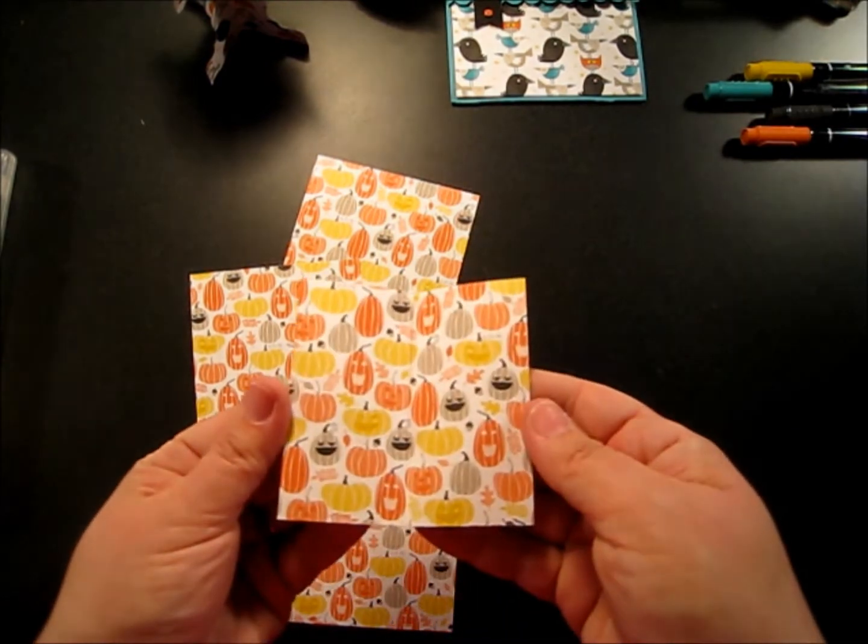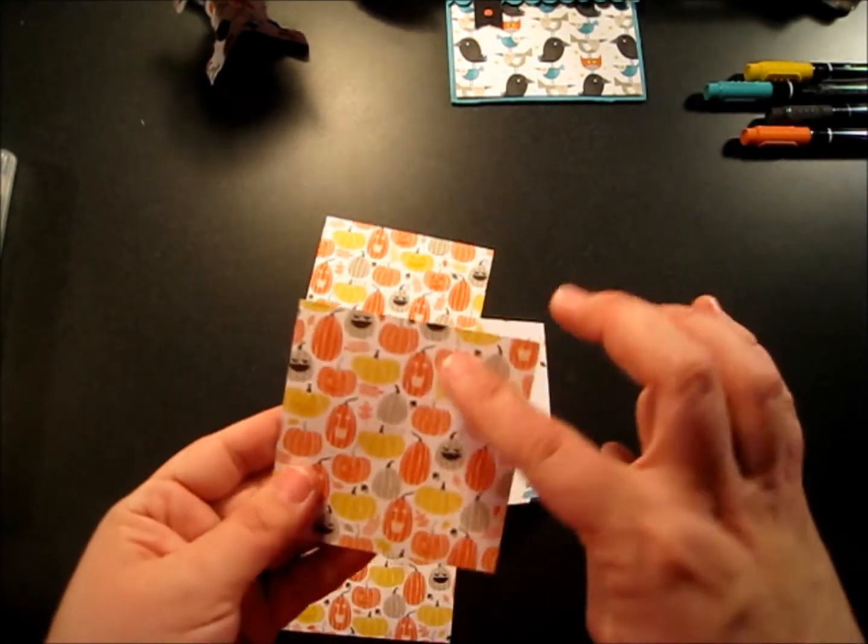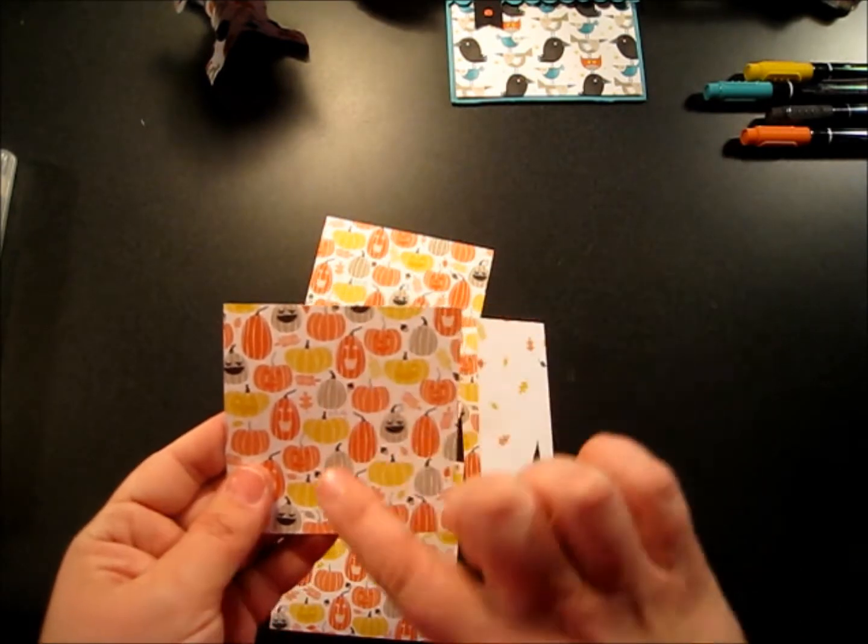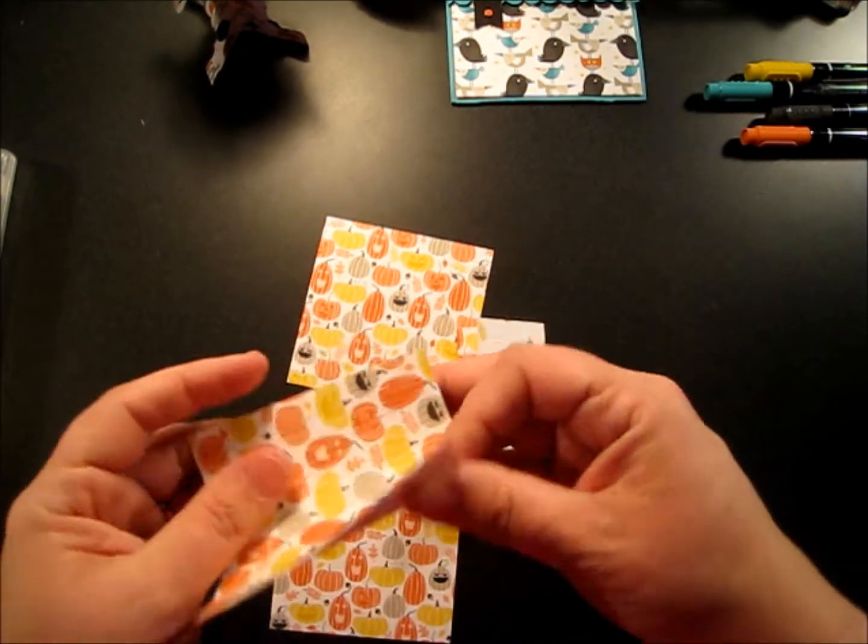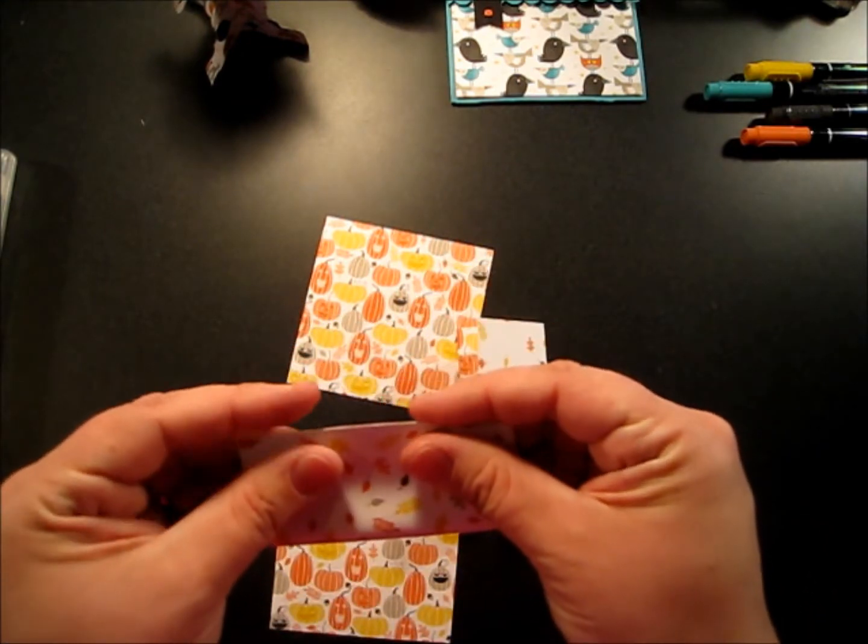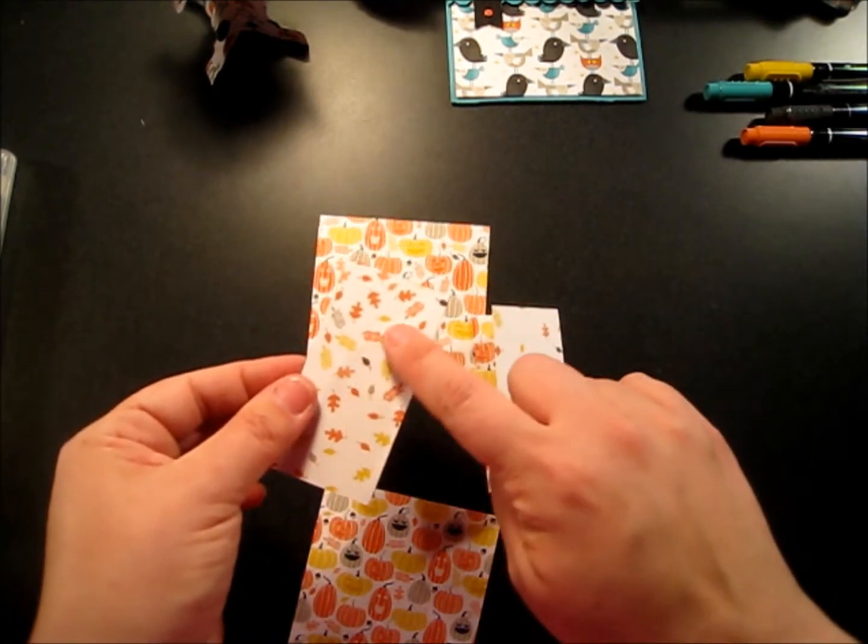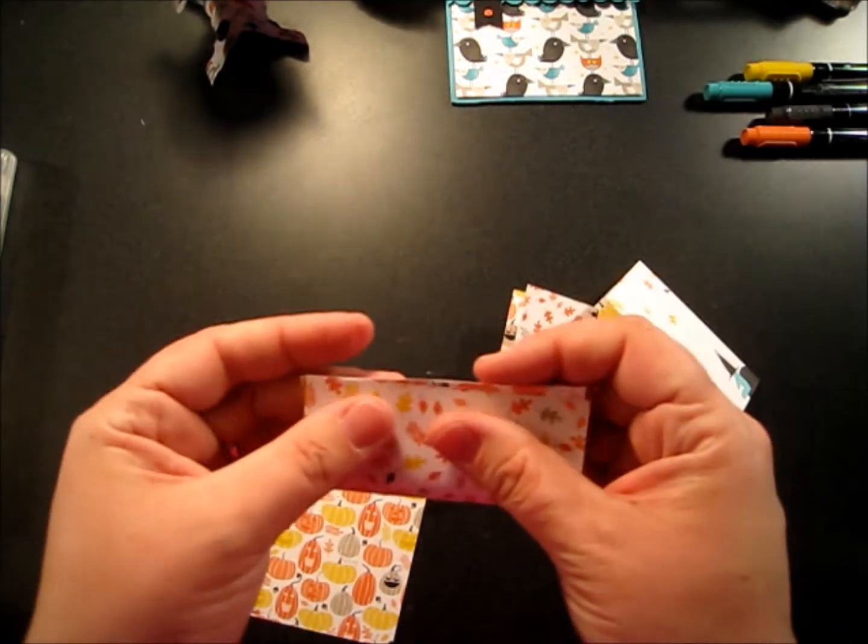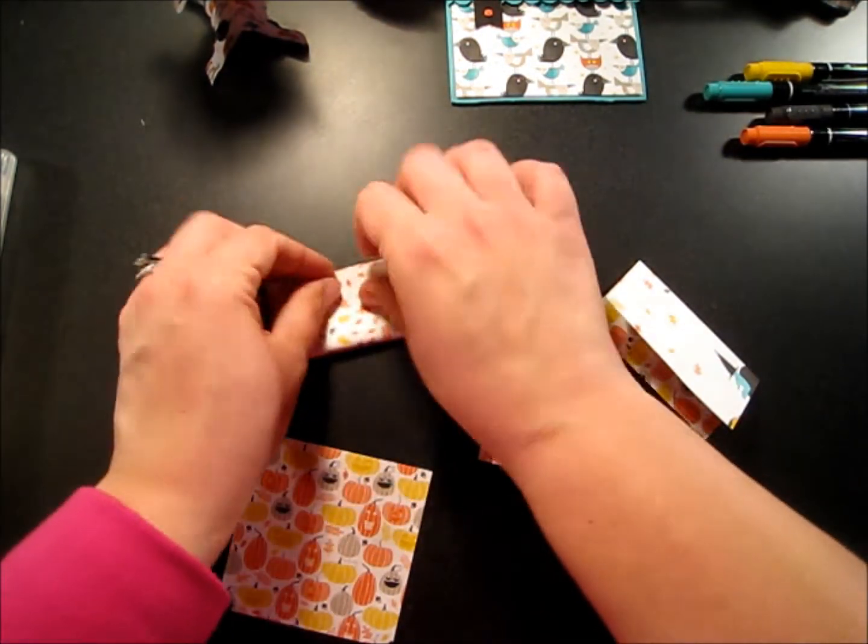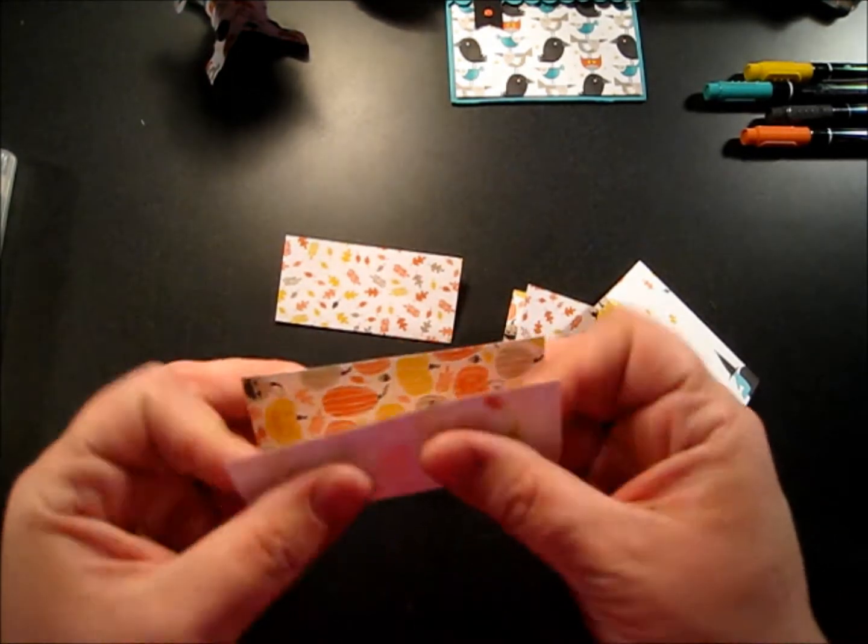Whatever pattern you want showing, you want to fold that in. I want to see the pumpkins, so I'm going to fold all of those in. If your pattern has any kind of direction, make sure you're folding on the right direction instead of sideways, or else you'll end up with sideways pumpkins and up and down pumpkins. Something to pay attention to when you're folding your DSP.